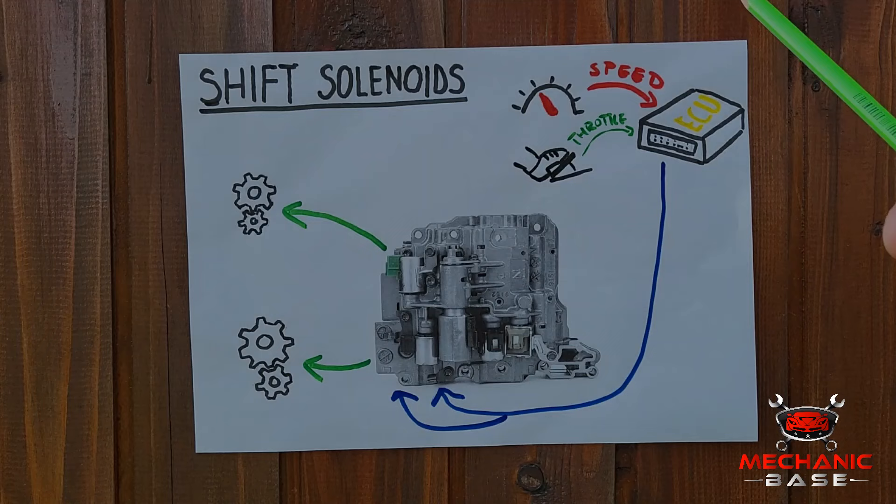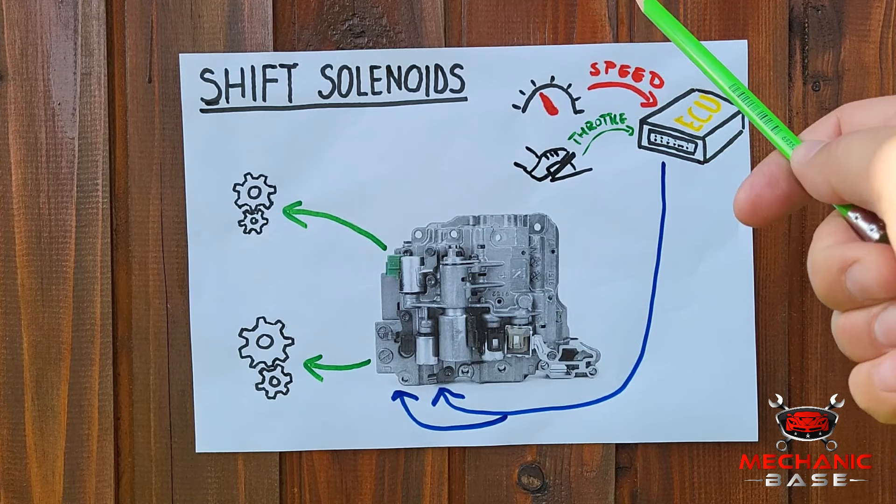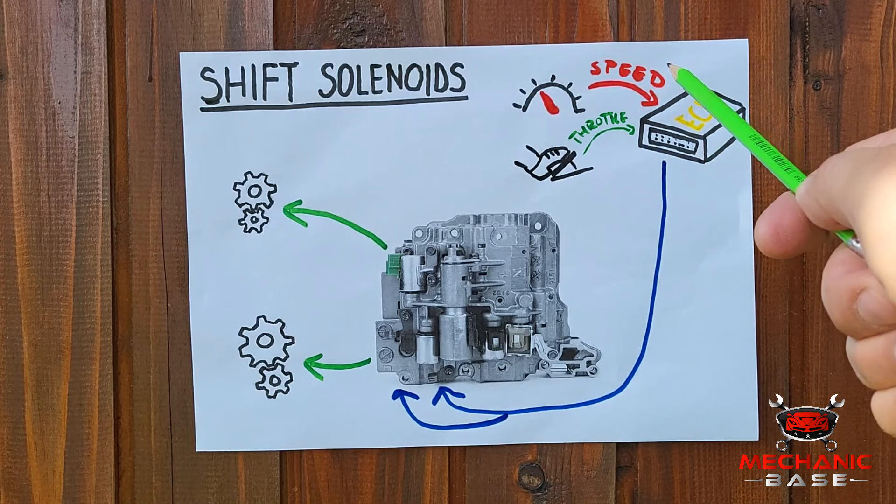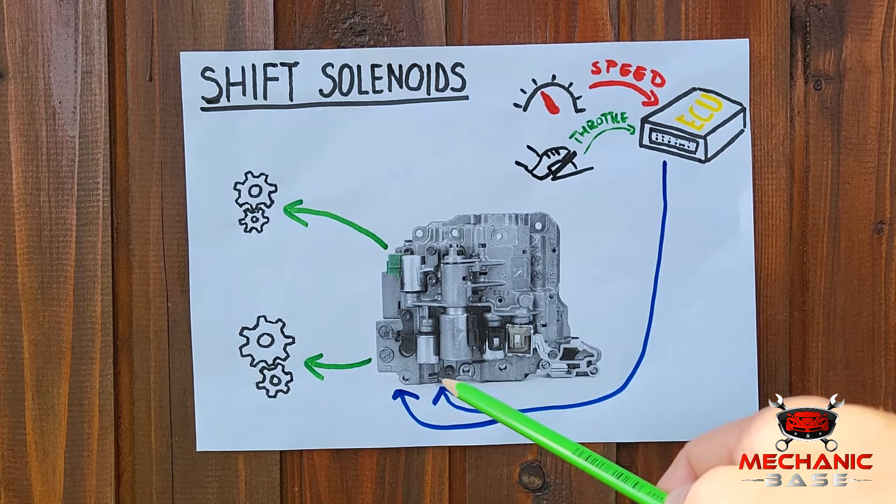The ECU, also known as the powertrain module in some cars, monitors a wide range of driving parameters. This includes vehicle speed, engine speed, and how much the driver presses the accelerator pedal. When the ECU determines it's time to shift, it sends an electrical signal to a series of shift solenoids inside the transmission.